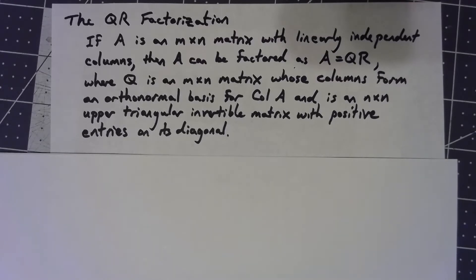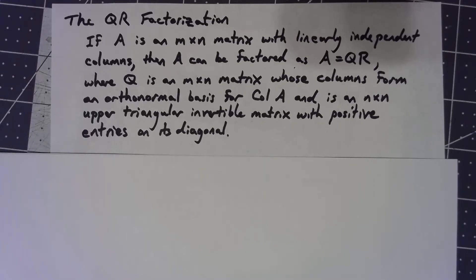That being said, it is easy to do once you understand the Gram-Schmidt process. So what it says is that if we have a matrix — and it doesn't have to be a square matrix, it can be, but it doesn't have to be — but it does have to have linearly independent columns.